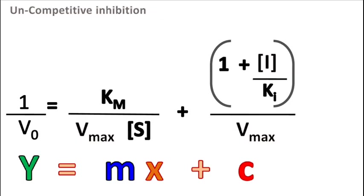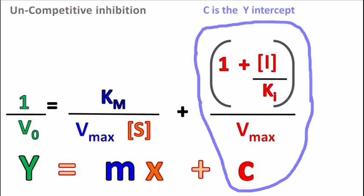This equation can be compared with the equation Y is equal to Mx plus C. Here Y is equal to 1 by V0, M which is the slope of the graph is equal to Km by Vmax, the value on the X-axis will be equal to 1 by S, and the Y-intercept will be equal to (1 plus I upon Ki) upon Vmax.